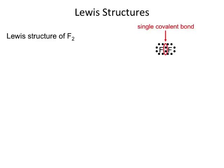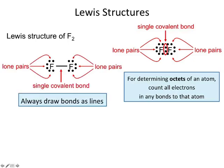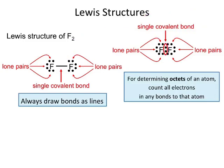Here's our Lewis structure of fluorine. This is called a covalent bond because the valence electrons are being shared — covalent. We'll leave the other electrons around because they have a physical importance as well, and so we call these lone pairs. When determining octets, you need to count all the electrons in any bonds to that atom and in lone pairs to that atom. What we typically do is take the two electrons in the single covalent bond and draw them as a line. You see letters that represent elements and lines in between them.